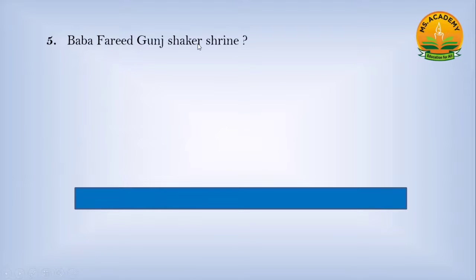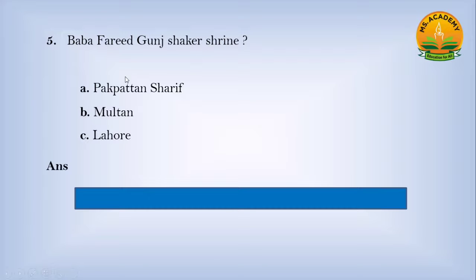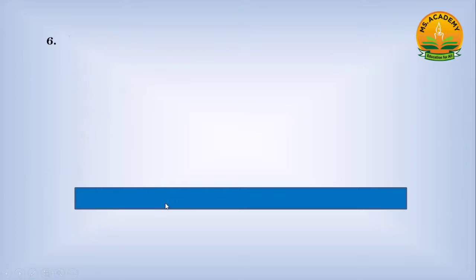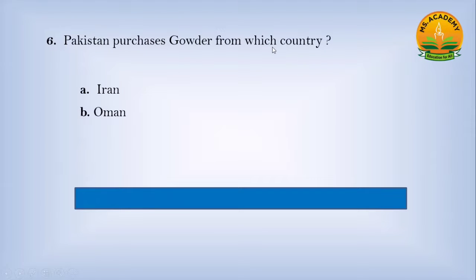Baba Farid Ganj Bakhsh shrine: option A Pakpattan Sharif, option B Multan, option C Lahore — answer is A, Pakpattan Sharif. Pakistan purchased Gwadar from which country? Option A Iran, option B Oman, option C China — answer is B, Oman.